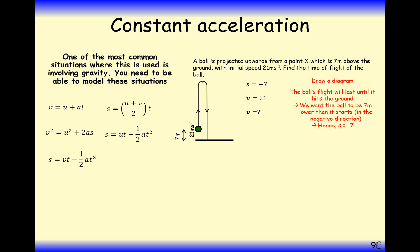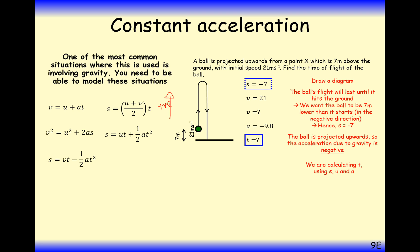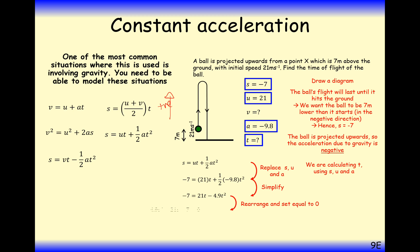U is the starting speed, 21. Acceleration due to gravity is minus 9.8, with upwards as positive. T is unknown. Using S equals UT plus half AT squared, we replace all those letters and need to solve a quadratic equation.